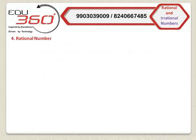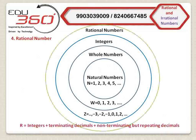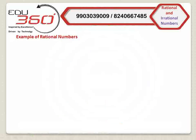Now, if we add fractions — either with terminating decimal expressions or non-terminating but repeating decimal expressions — with the set of natural numbers N, we will get the set of rational numbers R. That is, R equals integers plus terminating decimals plus non-terminating but repeating decimals. Now we will try to understand rational numbers with the help of three examples: prove that (1) 0.57, (2) 0.3 where 3 is recurring, and (3) 0.27 where both digits 2 and 7 are recurring, are rational numbers.